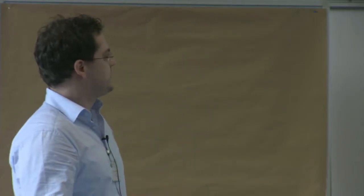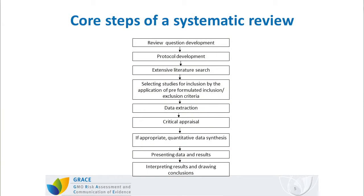The core steps are depicted here. Every systematic review starts with the formulation of a specific review question. Based on this question, a protocol is developed a priori before the actual review starts. The protocol makes the entire methodological detail explicit that the whole systematic review has to follow. Based on the protocol, a search strategy is applied to an adequate number of databases in order to identify a pool of possibly eligible reports.